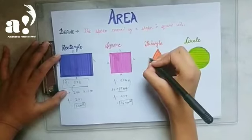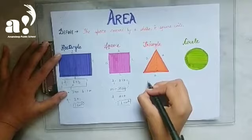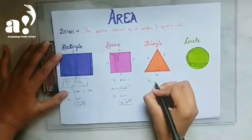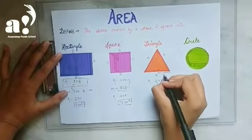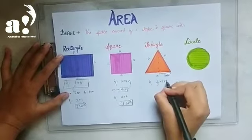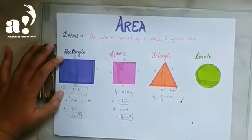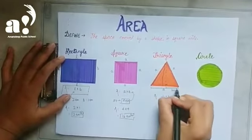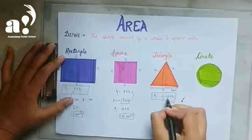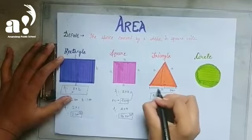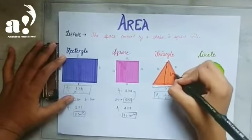Now let's move to the triangle. All three sides of a triangle are different, so we label them accordingly. The formula to find the area of a triangle is: ½ × base × height. This is your base, and this is the height of the triangle.